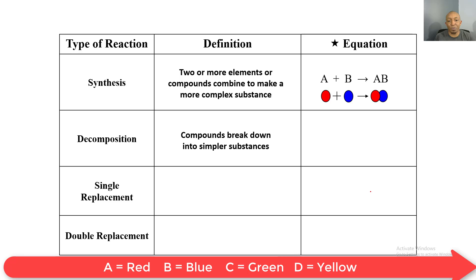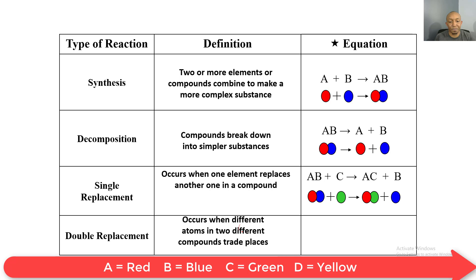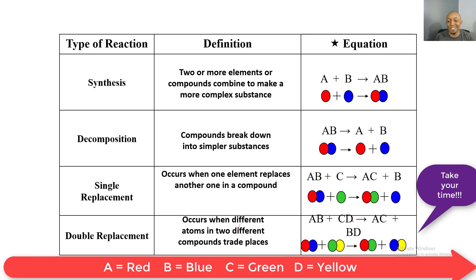For single replacement, this occurs when one element replaces another one in a compound. The equation is AB plus C yields AC plus B — notice C replaced B on the product side. For double replacement, this occurs when different atoms in two different compounds trade places. The equation is AB plus CD yields AC plus BD, and you see that two things get replaced in this chemical reaction.